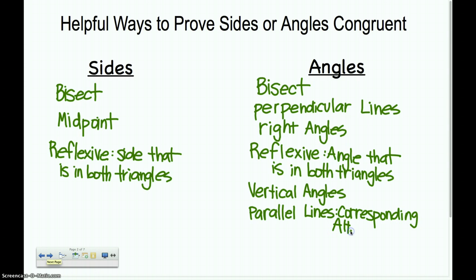Alternate interior angles are congruent. And it's kind of rare for our purposes, but alternate exterior also. Notice we don't talk about same side interior because they are supplementary. We don't care about supplementary triangles. It doesn't even make sense. But these angles that are congruent definitely help us.